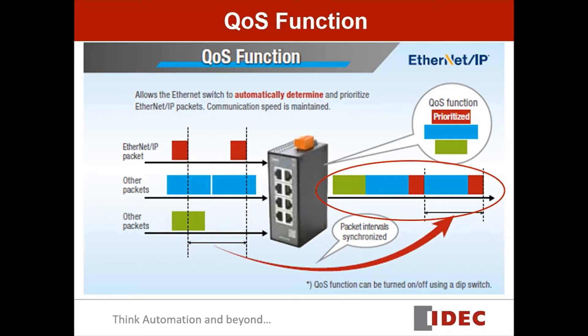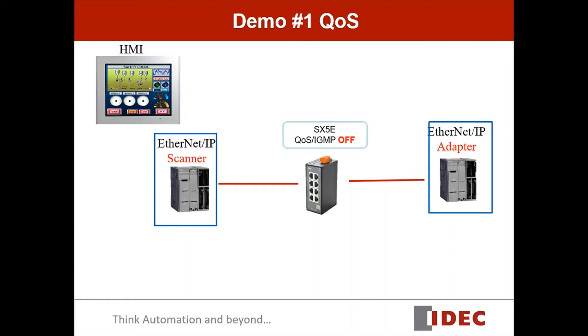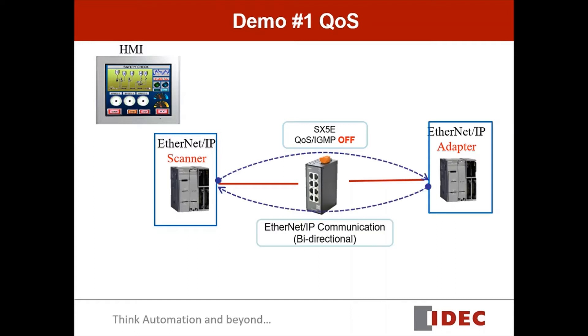The QoS can be easily turned on or off using a DIP switch. In the next few slides, I will be showing you how the QoS function performs in the network traffic. I have a demo setup using two PLCs connecting to the switch. One is configured as an Ethernet IP scanner and the other one is the Ethernet IP adapter. Let's check the communication cycle between the two PLCs over Ethernet IP communication.